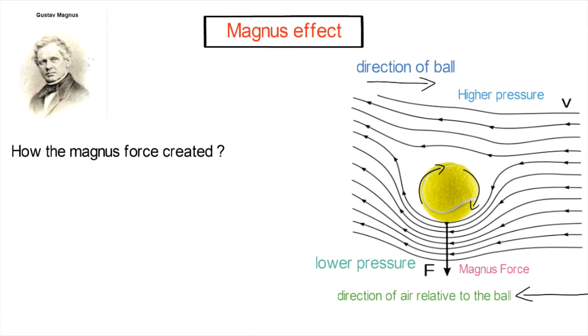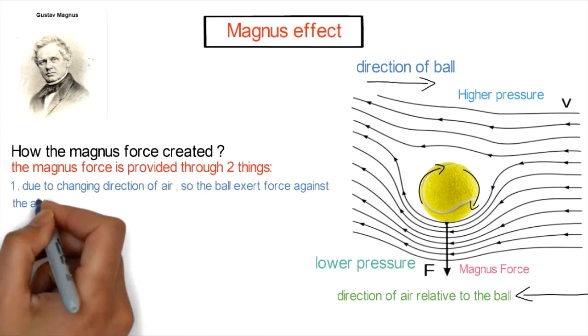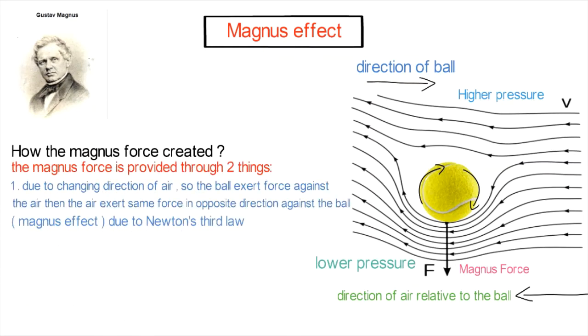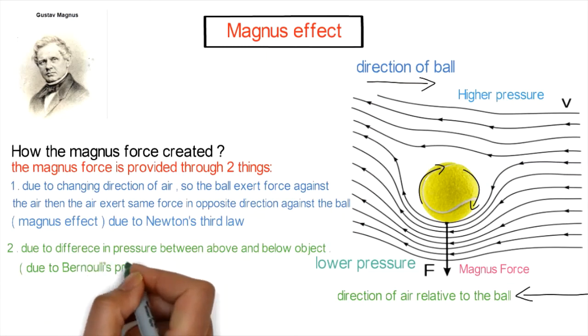We have two things that provide the Magnus force. The first one is changing momentum: because the ball exerts force against the air, the air exerts the same magnitude of force against the ball in the opposite direction according to Newton's third law. This force is considered the Magnus force.